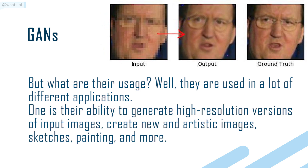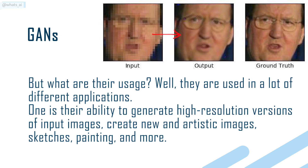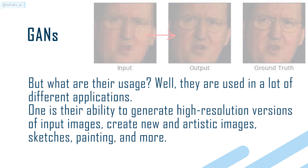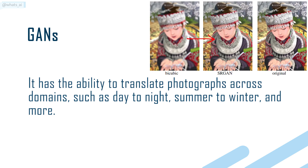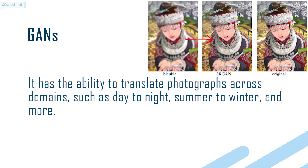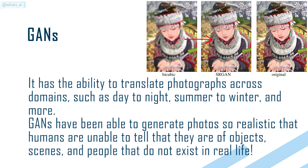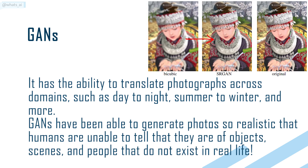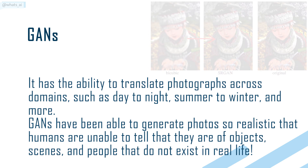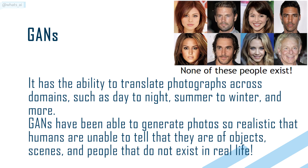One is their ability to generate high-resolution versions of input images, create new and artistic images, sketches, paintings, and more. They also have the ability to translate photographs across domains, such as day to night, summer to winter, and more. GANs have been able to generate photos so realistic that humans are unable to tell that they are of objects, scenes, and people that do not exist in real life.